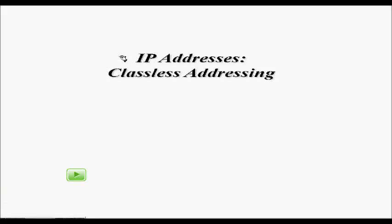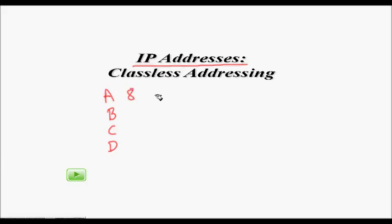In this lecture we are going to learn about classless IP addressing. Last time we learned about classful IP addressing where addresses could be categorized into class A, B, C, and D. Class A had 8 bits for the network ID and 24 bits for the host ID. Class B had 16 bits for the network ID and 16 bits for the host. Class C had 24 bits for the network ID and just 8 bits for the host ID.